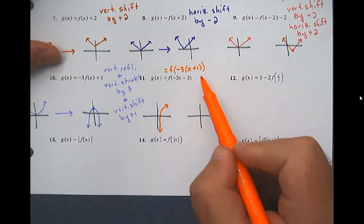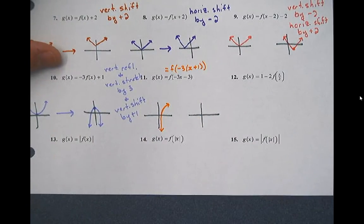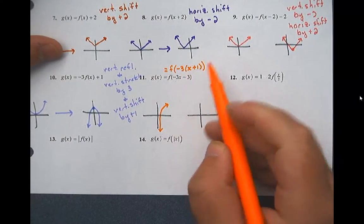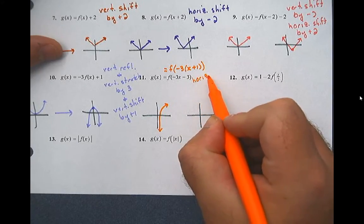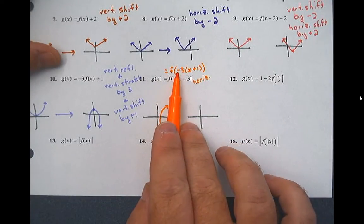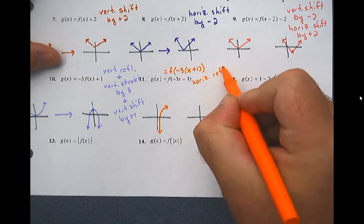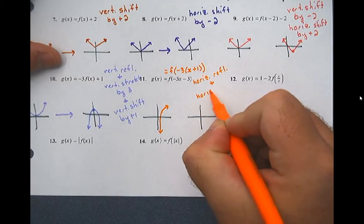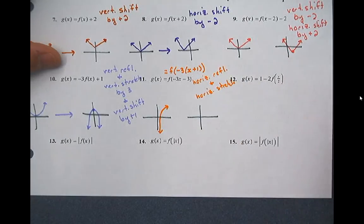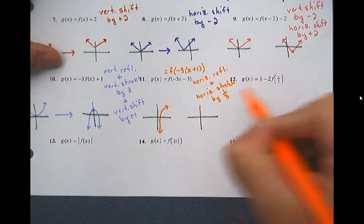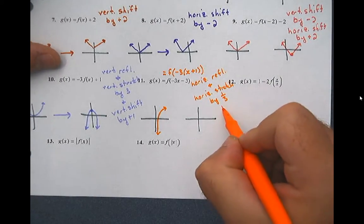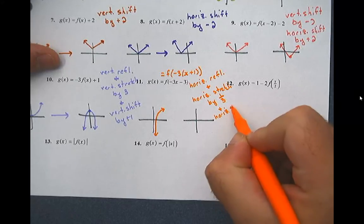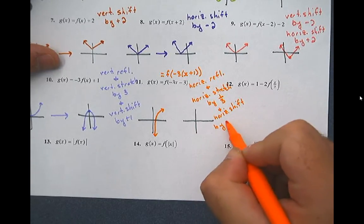Now let's list the transformations. The negative 3 is getting multiplied to x, so that's going to be horizontal. First, the negative — that's going to be a horizontal reflection. And that 3 is getting multiplied, so that's a horizontal stretch. But because it's attached to x, it's going to do the inverse — horizontal stretch by one third. And we've got a plus 1 added to the x, so that's a horizontal shift by the opposite, so negative one.